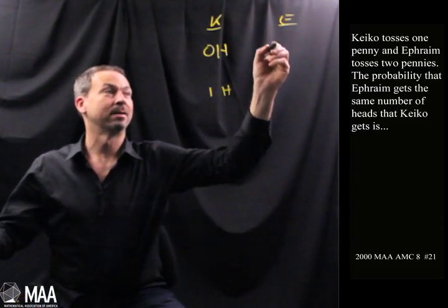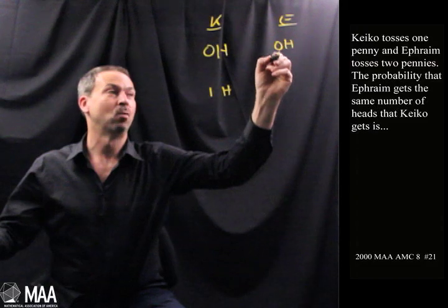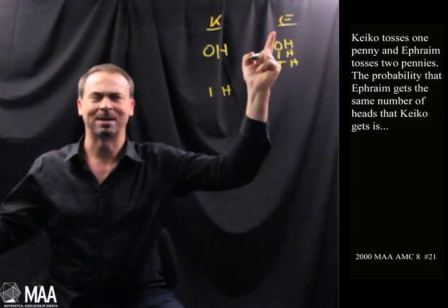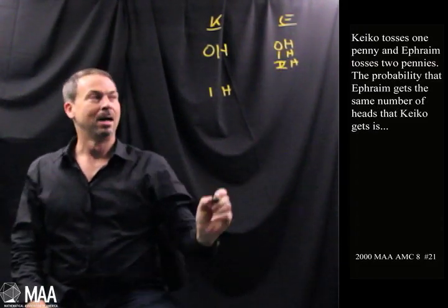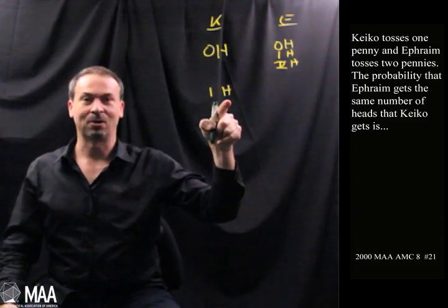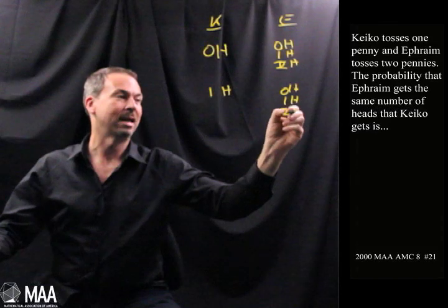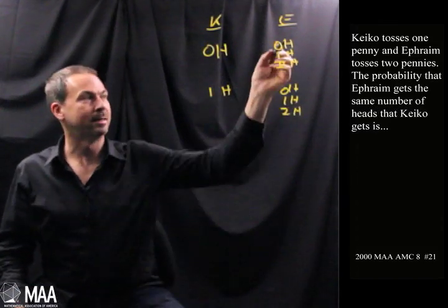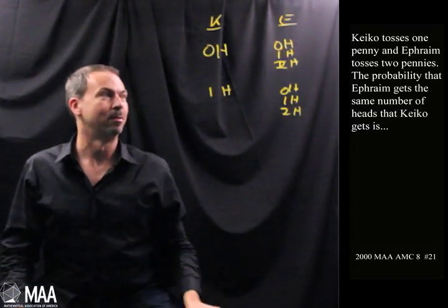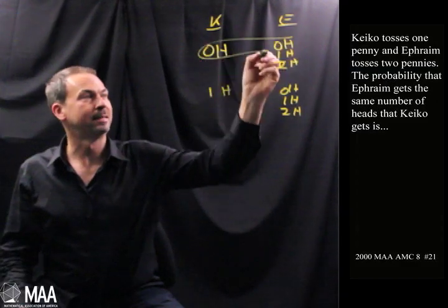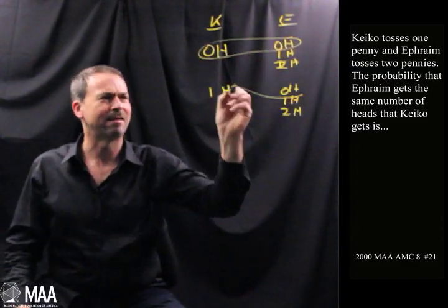Ephraim, I guess, gets either zero heads with his two pennies, one head, or two heads. Sorry, he's got two pennies. Or I guess if Keiko got his one head, the same thing could occur for Ephraim. So it looks like the answer to this problem is given in this table. Here they have the same number of heads, zero heads each, and here they have the same number of heads.